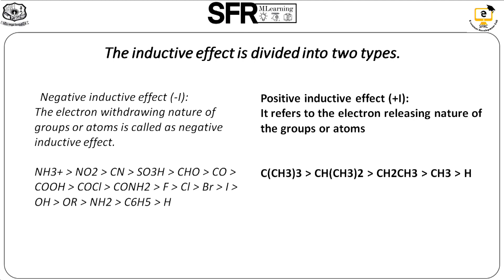Inductive effect plays a vital role in the strength of acids. Any atom or group showing a plus I effect decreases the acid strength, as it increases the negative charge on the carboxylate ion, which holds the hydrogen more firmly. Alkyl groups have a plus I effect, giving the order: acetic acid (ethanoic acid), propanoic acid — in terms of relative acid strength.